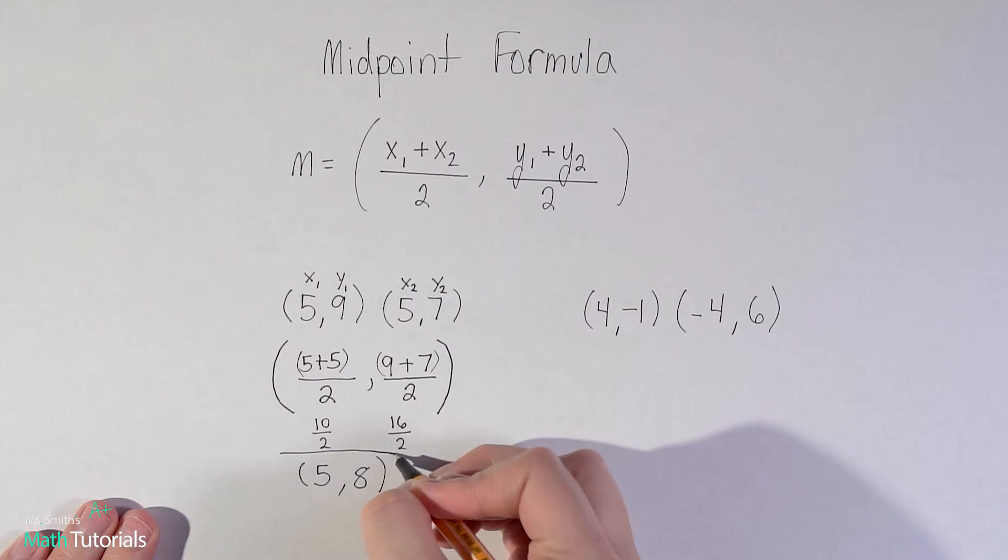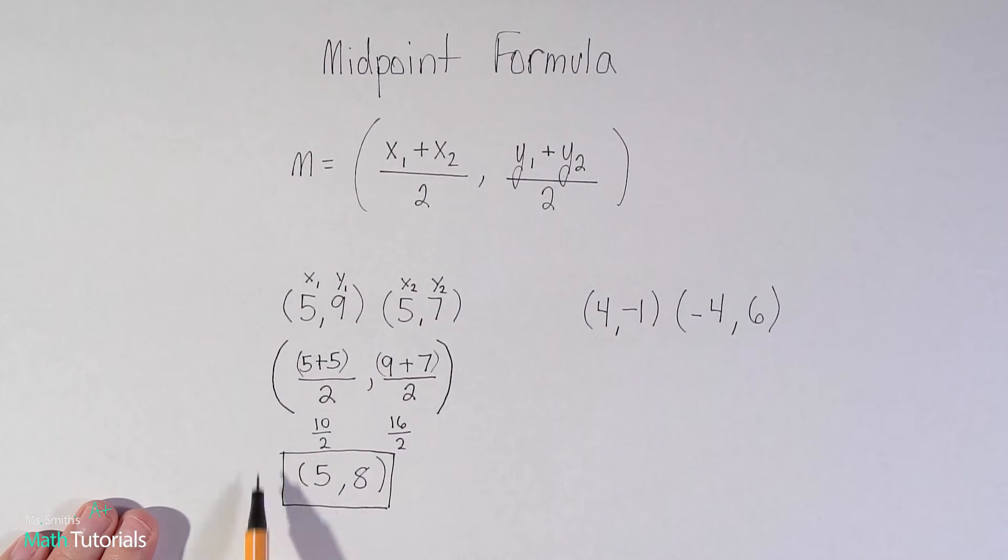So my final answer would be (5, 8). So (5, 8) on a graph would be the halfway point, the midpoint between this point and this point.